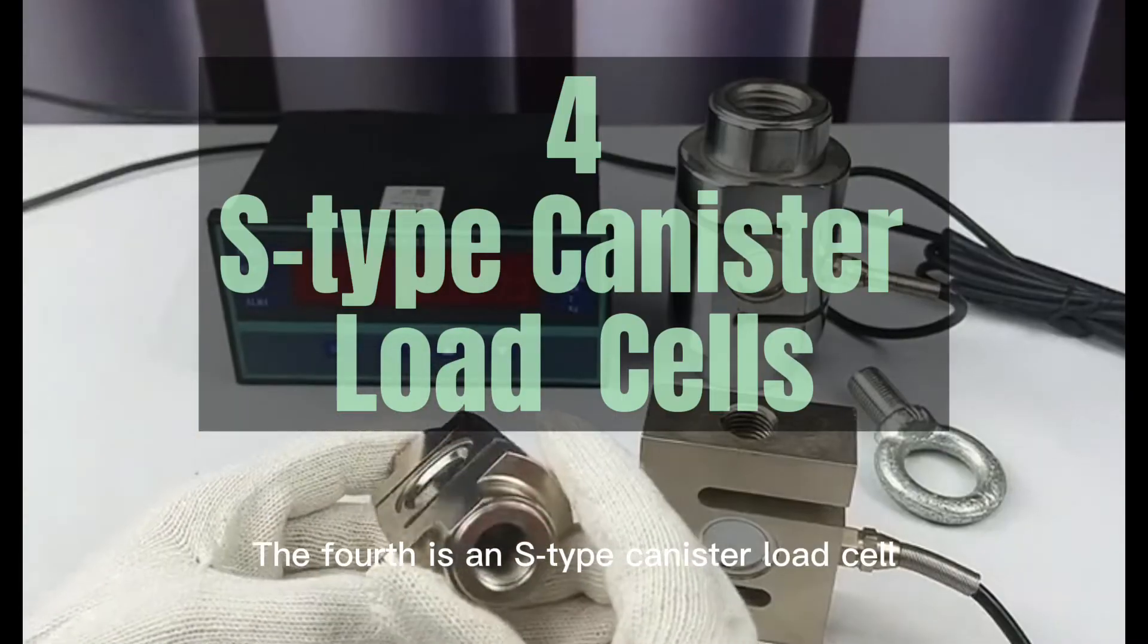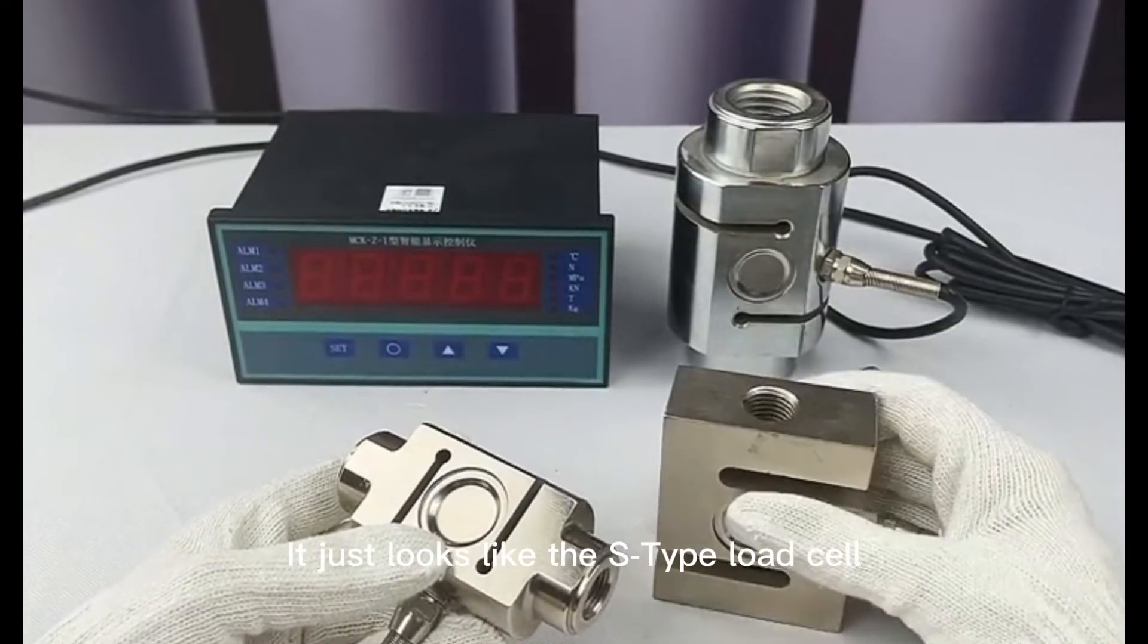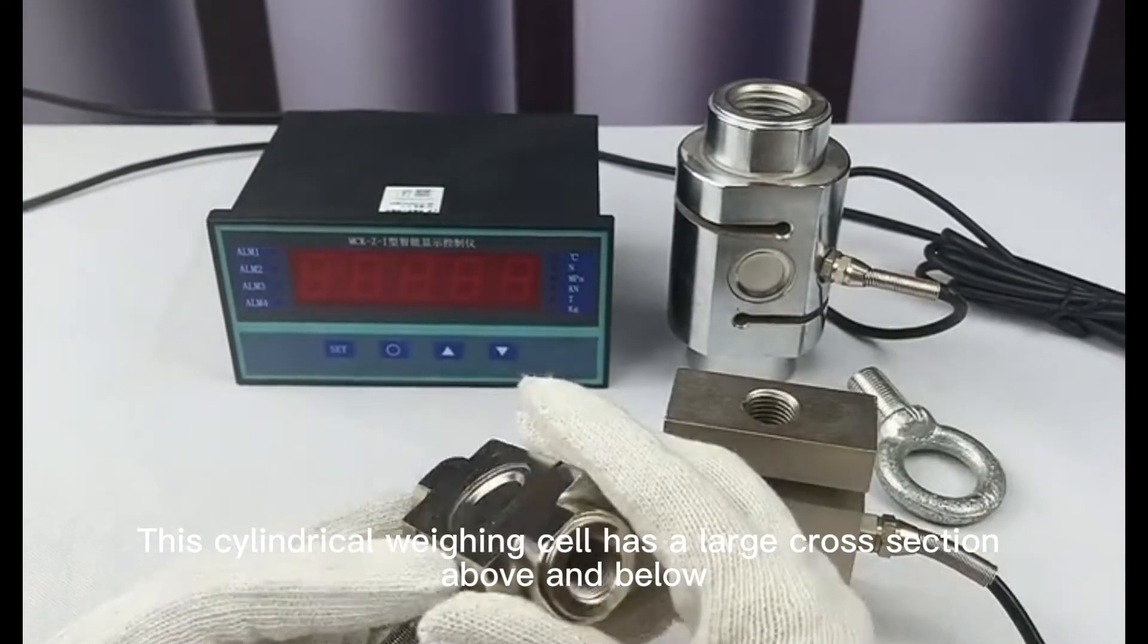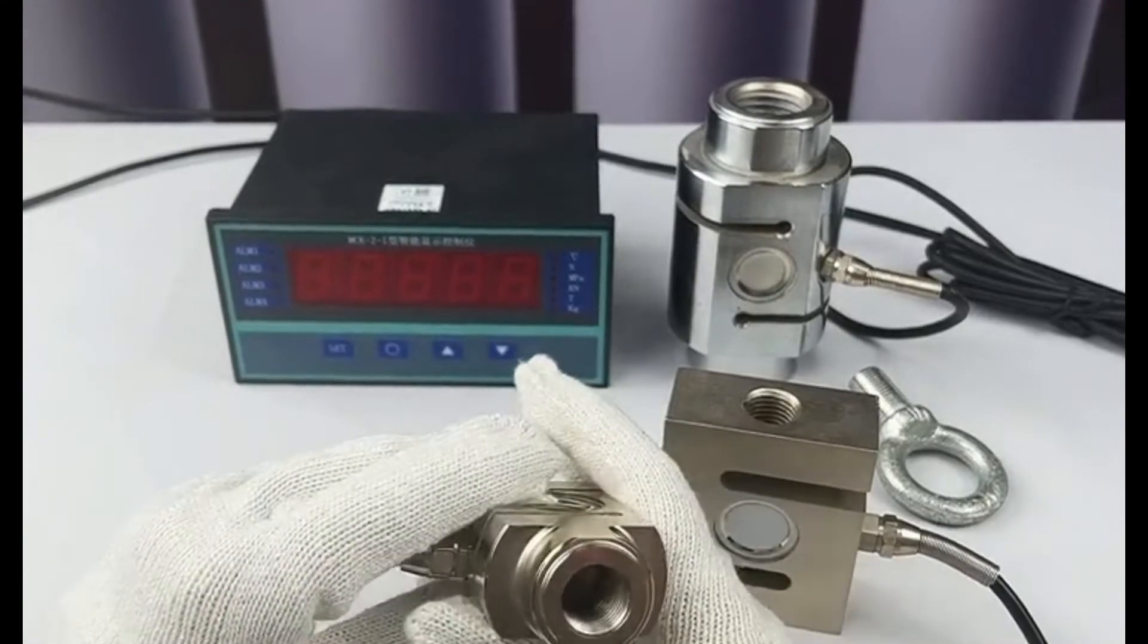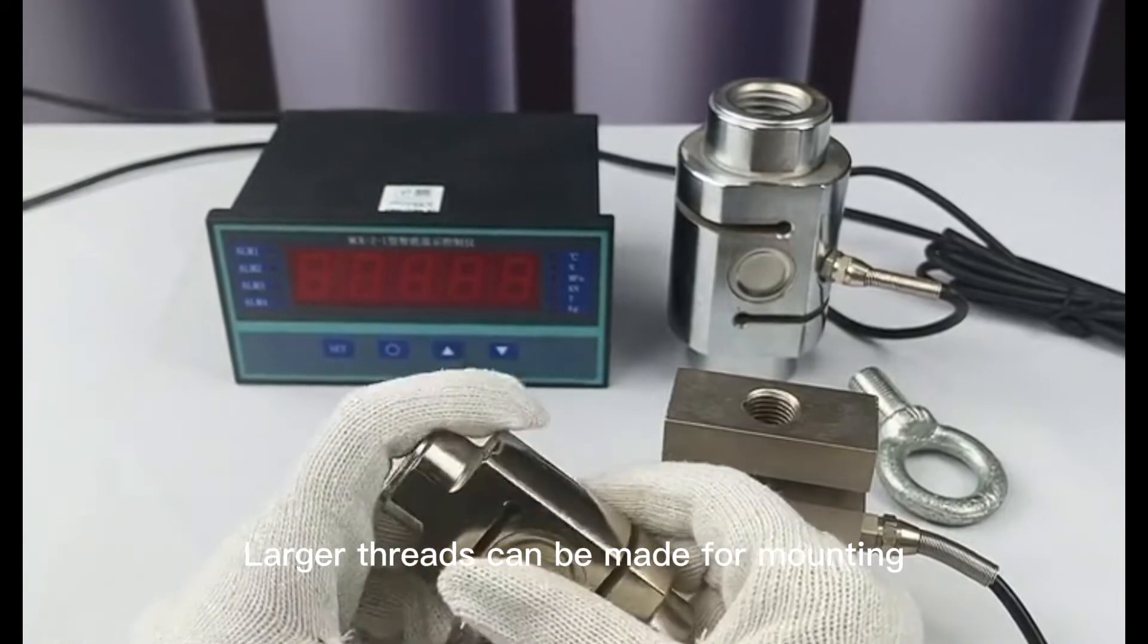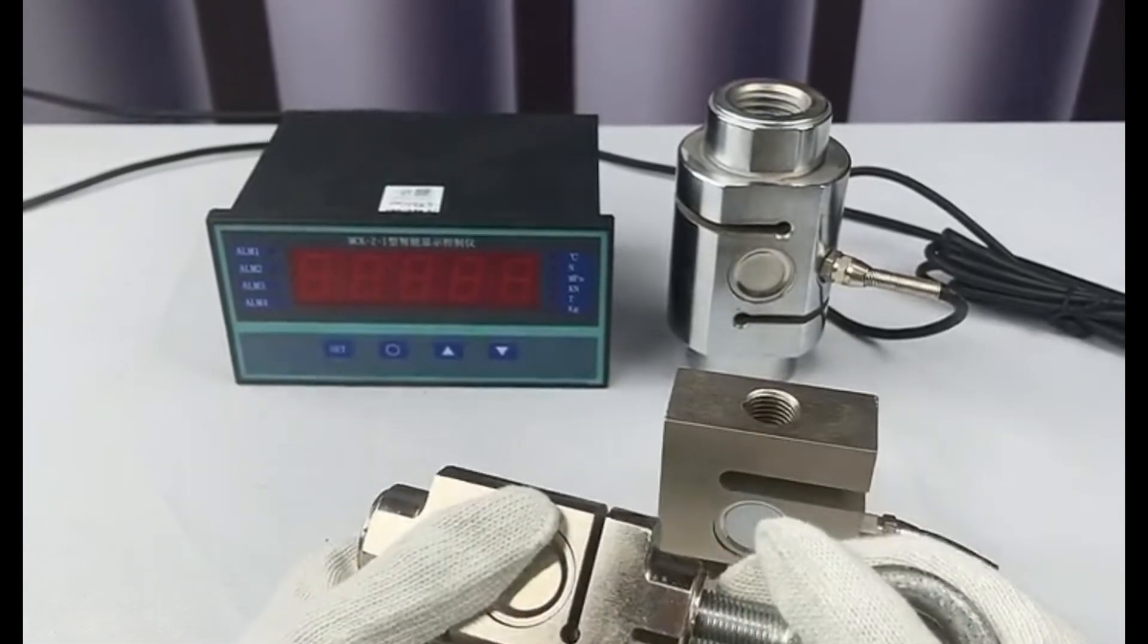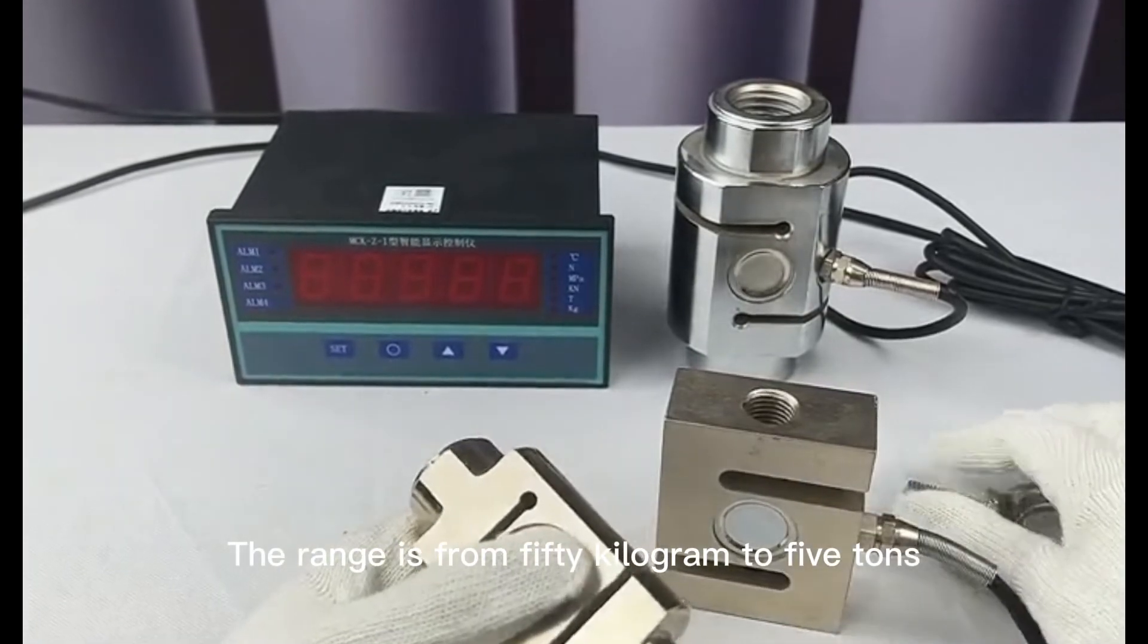The fourth is an S-type canister load cell. It's all tension and pressure. It just looks like the S-type load cell. This cylindrical weighing cell has a large cross section above and below. Larger threads can be made for mounting. When measuring the tension, they actually connect the upper and lower ends of the thread holes for pulling. The range is from 50 kg to 5 tons.